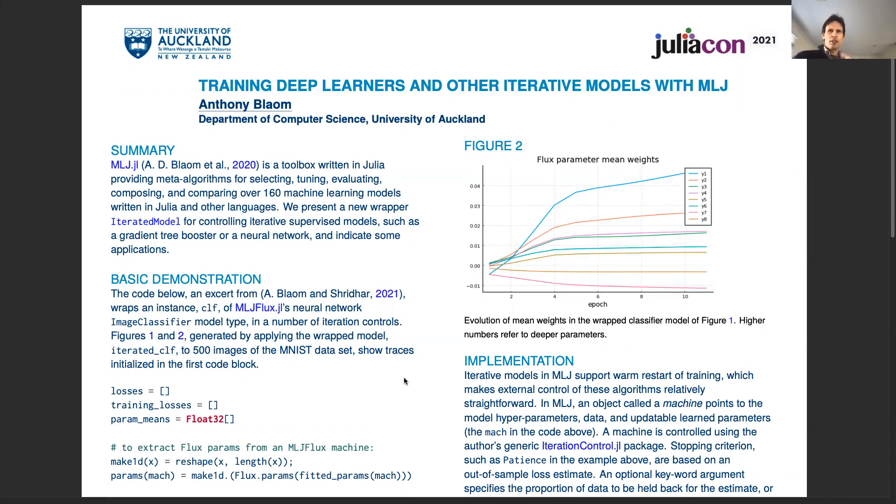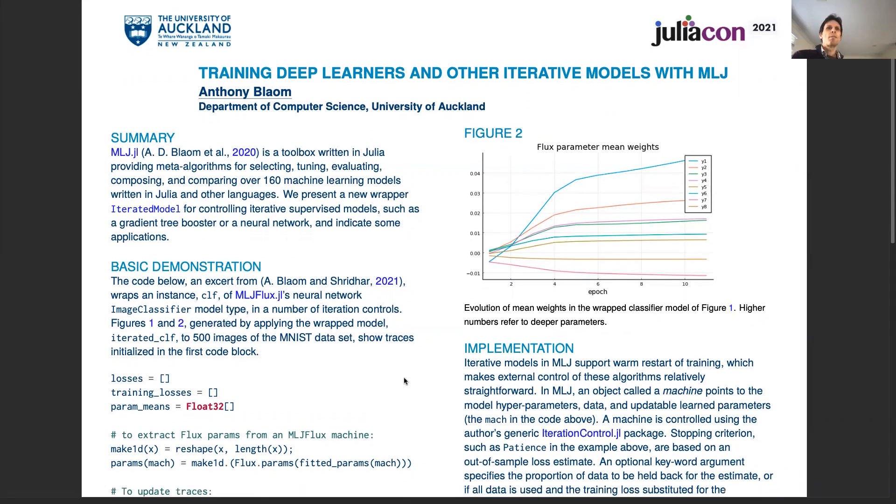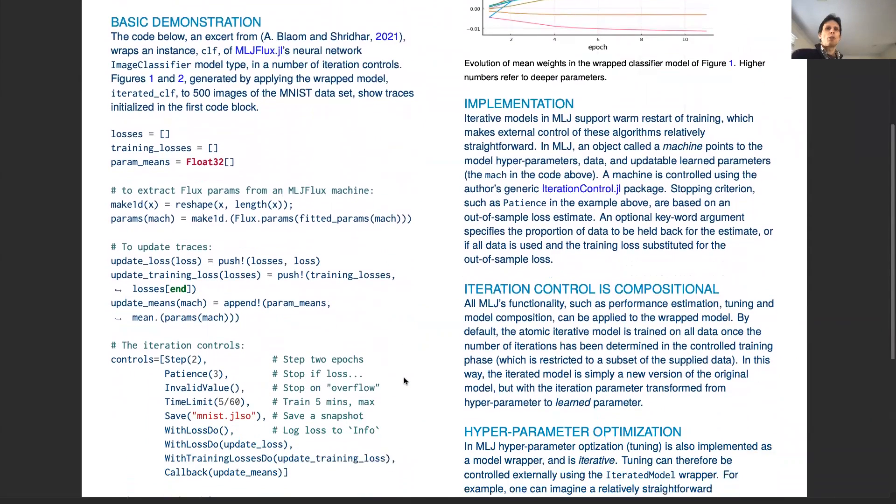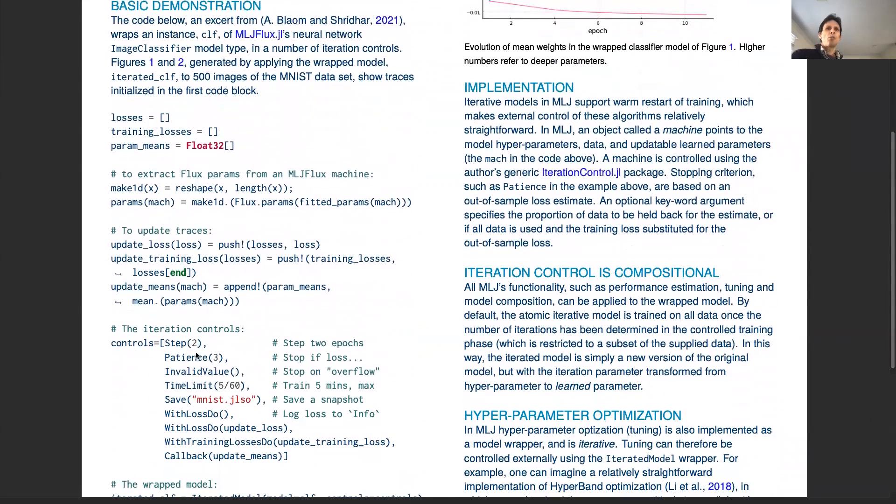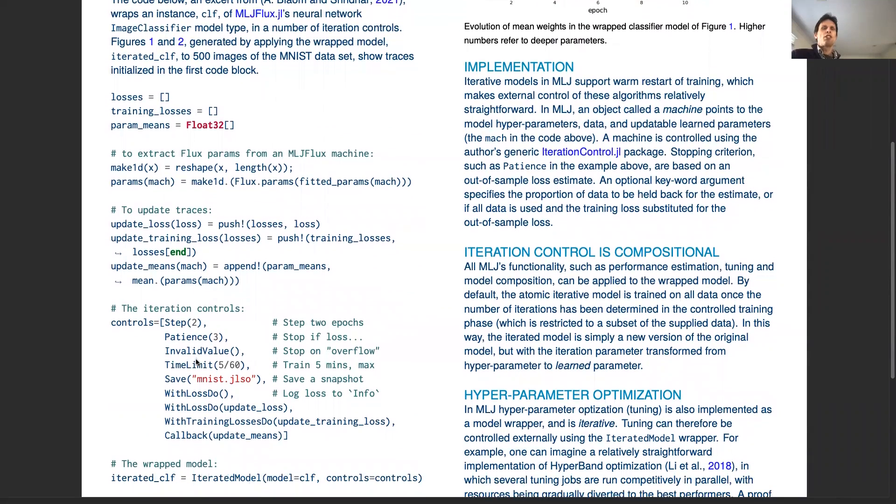Typically, these controls include criteria which tell us when to stop training the model, so that the wrapped model becomes essentially a self-iterating version of the original model.